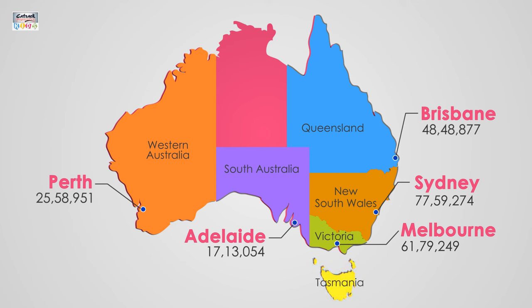Tasmania: the capital of Tasmania is Hobart and it has the population of 517,588.